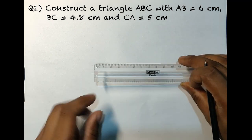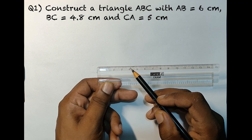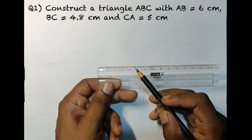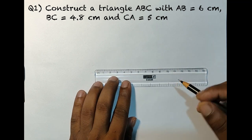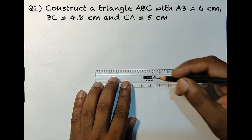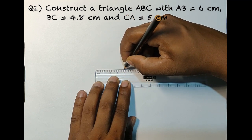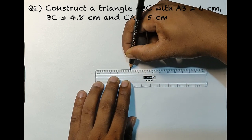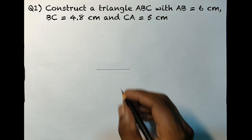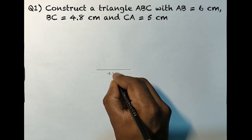First, to draw a triangle we need a base, so let's take BC, that is 4.8 centimeters, and draw the line segment 4.8 centimeters to get the base. You can take any side as the base; in this case we are taking BC. Once done, write the measurements and label it.